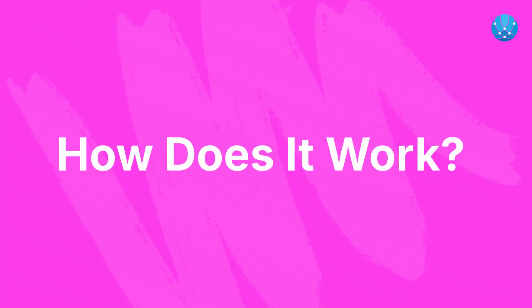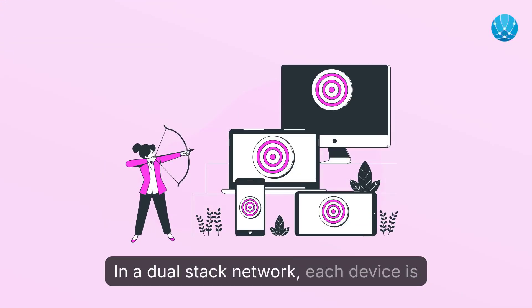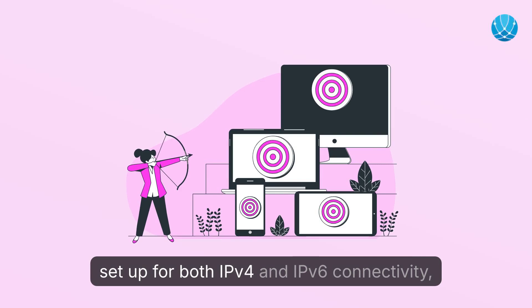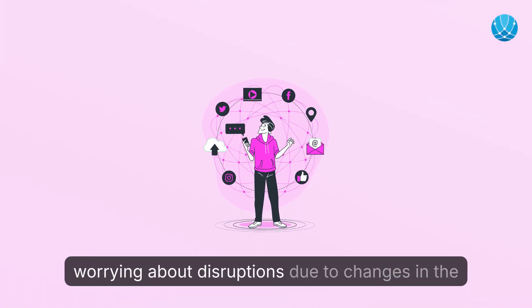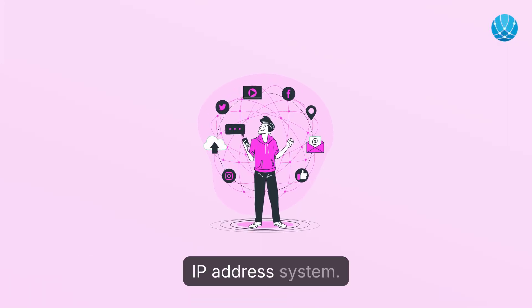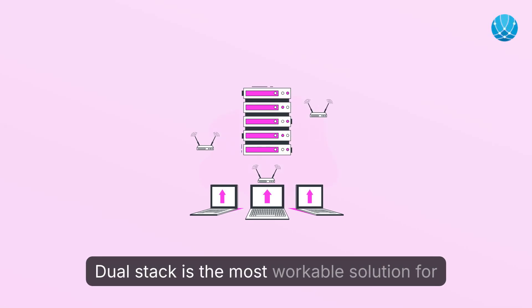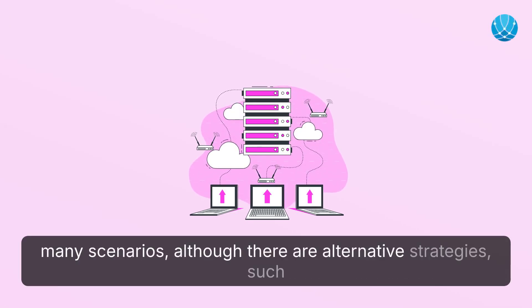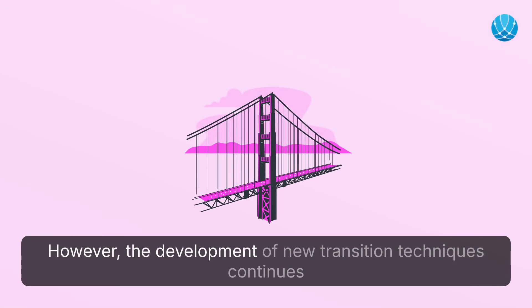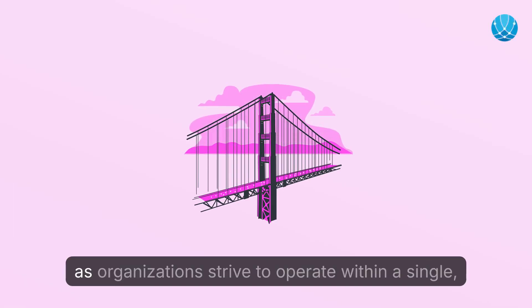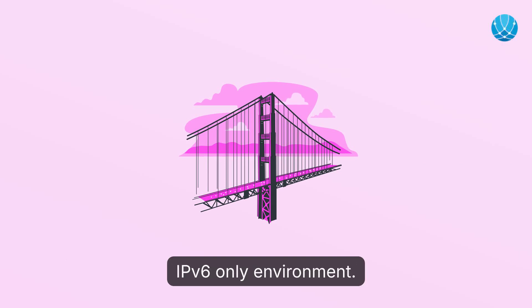In a Dual Stack network, each device is set up for both IPv4 and IPv6 connectivity, allowing for active communication over either protocol. This means you can browse the web without worrying about disruptions due to changes in the IP address system. Dual Stack is the most workable solution for many scenarios, although there are alternative strategies such as tunneling. However, the development of new transition techniques continues as organizations strive to operate within a single IPv6-only environment.